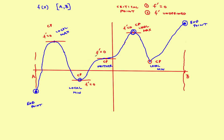To find the extreme values of a function, find the critical points — the maximum or minimum might occur within the interval at a critical point, or the extreme values might occur at one of the two endpoints.